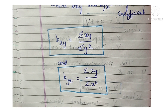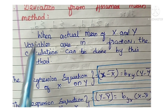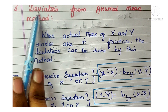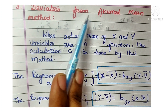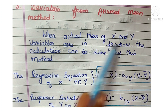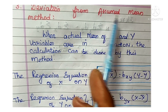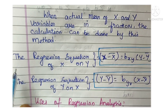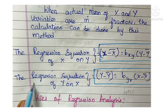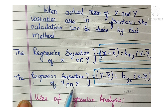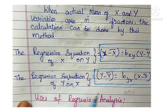Deviation from assumed mean method: This method is used when the actual mean of X and Y variables are in fractions — that is, not whole numbers. The regression equations remain the same: X − X̄ = BXY(Y − Ȳ) for X on Y, and Y − Ȳ = BYX(X − X̄) for Y on X.